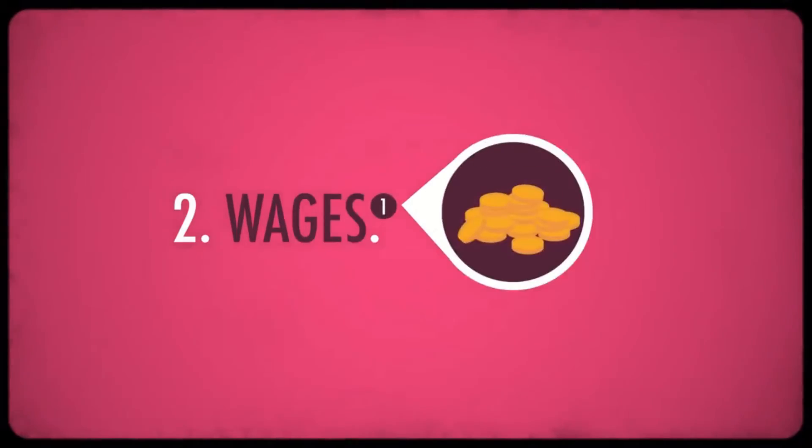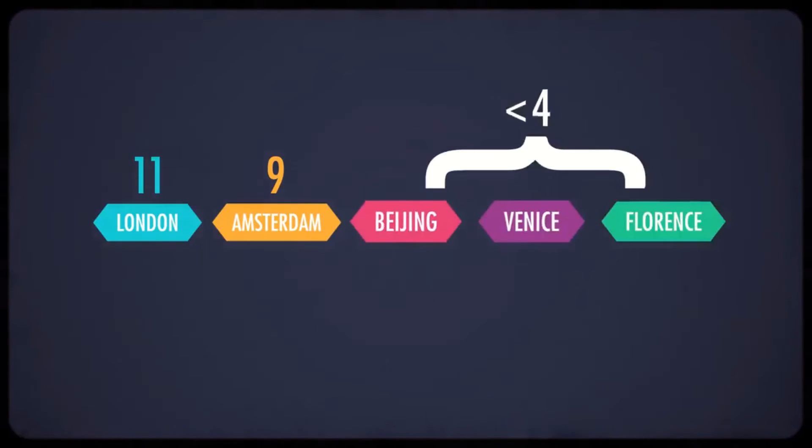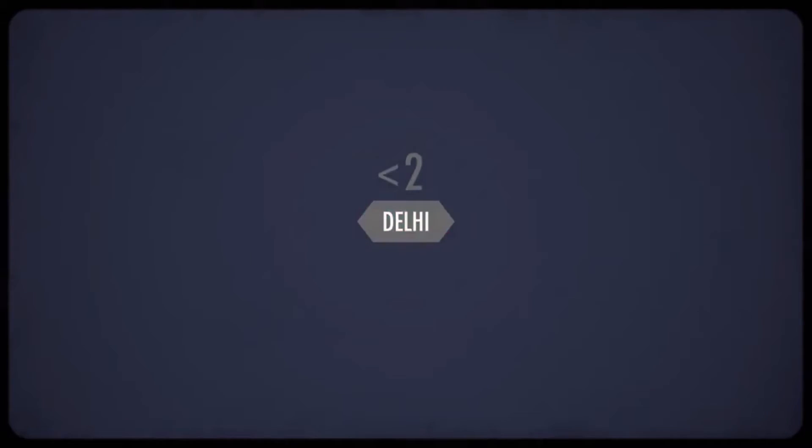Secondly, there were wages. Britain, and to a lesser extent the Low Countries, had the highest wages in the world at the beginning of the 18th century. In 1725, wages in London were the equivalent of 11 grams of silver per day. In Amsterdam, they were 9 grams. In Beijing, Venice, and Florence, they were under 4. And in Delhi, they were under 2. It's not totally clear why wages were so high in Britain. Like, one argument is that the Black Death lowered population so much that it tightened labor markets, but that doesn't explain why wages remained low in plague-ravaged Italy.